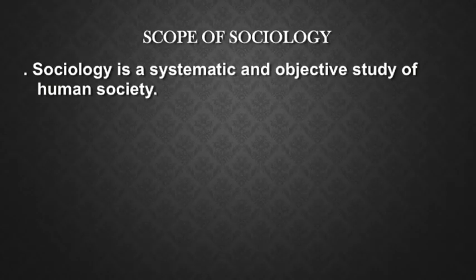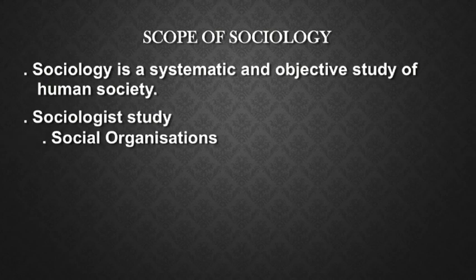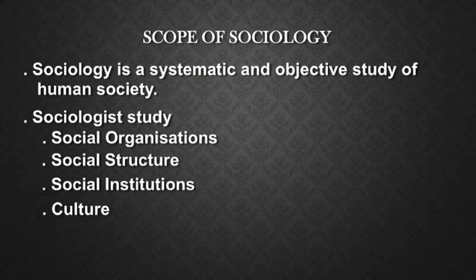The scope of sociology covers what sociologists study using any of the above perspectives. As a sociologist, you will study social organizations, social structure, social institutions, culture, families, the workplace, medicine, media, newspapers, revolutions, science, and the development of knowledge — all of this becomes the scope of sociology. In short, as a sociologist, you will look at all that surrounds you.